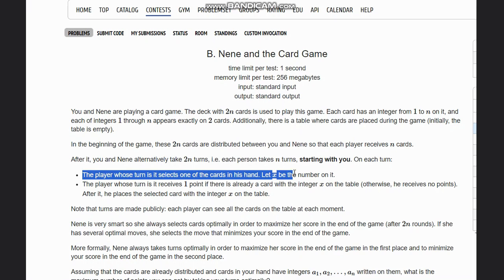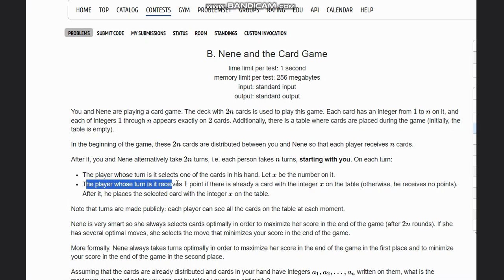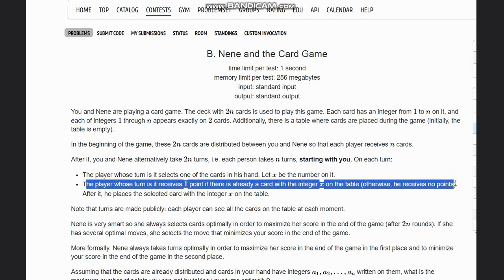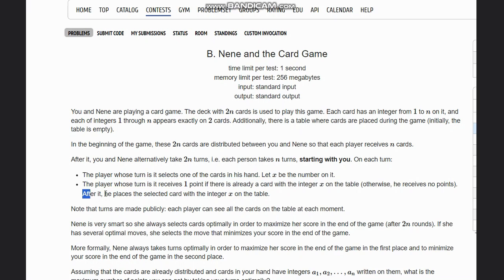On each turn, the player whose turn it is selects one of the cards in his hand. Let x be the number on it. The player receives one point if there is already a card with the integer x on the table, otherwise he receives zero points. After it, he places the selected card with integer x on the table.